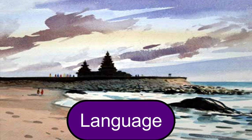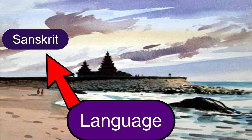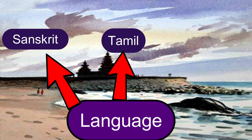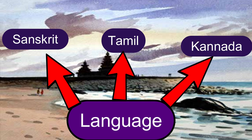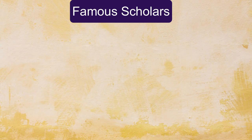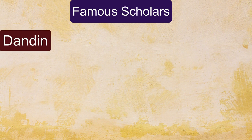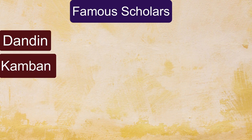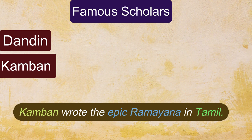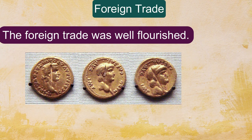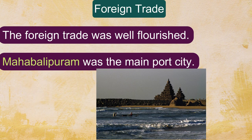Languages used during that period were Sanskrit, Tamil, and Kannada. Some famous scholars of this age were Dandin and Kamban. Kamban wrote the epic Ramayana in Tamil. Foreign trade was well flourished, and Mahabalipuram was the main port city.